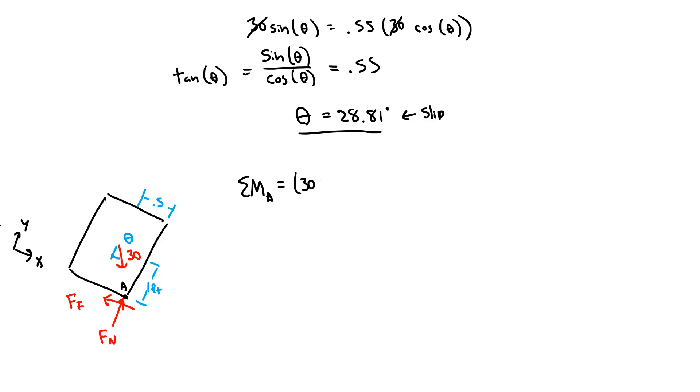So I'm going to have 30 times the cosine of theta, that's the y component. That would cause a counterclockwise moment, so that's positive, and the distance there is 0.5. Then the x component would cause a clockwise rotation, so it's negative. The force is 30 sine of theta, and the distance there is 1 foot. That needs to add up to 0.